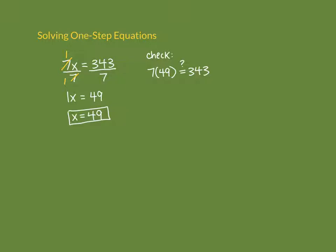Put a question mark above the equal sign because we're not sure yet if it's correct. These one-step equations may seem obvious, but this habit will help with more complicated equations later. Evaluate: 7 parentheses 49 — parentheses next to a number indicates multiplication. 7 times 49 is 343, so 343 equals 343. Put a check mark to show it's true. Our final answer is x equals 49.